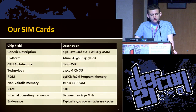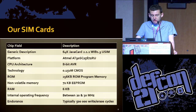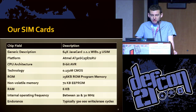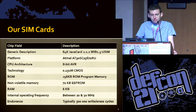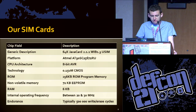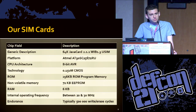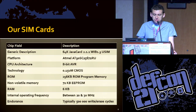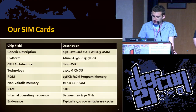The SIM cards we ended up getting actually have an AVR processor in them, not unlike an Arduino. They have 64K of memory and a tiny amount of RAM. They run what's called Java Card, which we'll talk about in a bit. They're somewhere between 20 and 30 megahertz — definitely little computers, although with a lot of limitations.